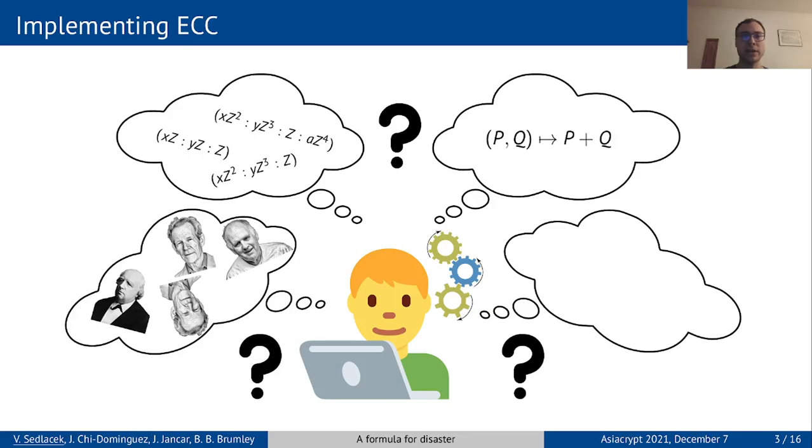And finally, you have to choose a scalar multiplication algorithm, such as a variant of double and add, ladder, or window. Not all of these choices are compatible, but still there are lots of them. In this talk, we will focus on the formula part.